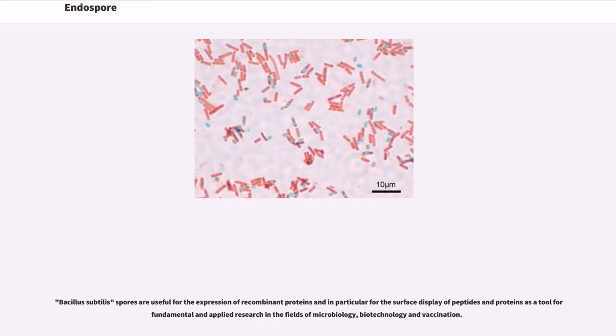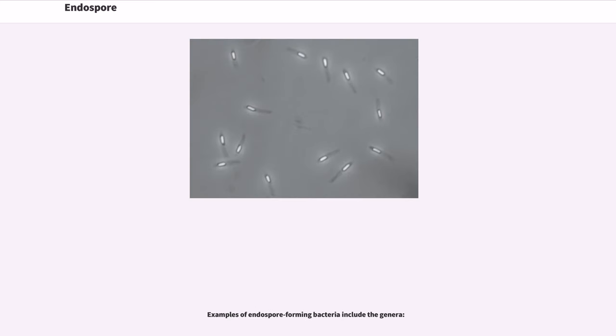Bacillus subtilis spores are useful for the expression of recombinant proteins and in particular for the surface display of peptides and proteins as a tool for fundamental and applied research in the fields of microbiology, biotechnology and vaccination. Examples of endospore forming bacteria include the genera.